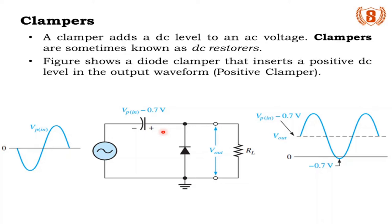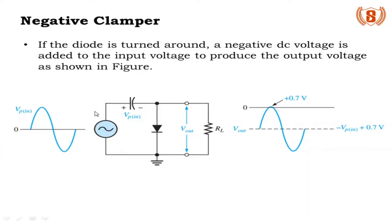From this point, the capacitor will try to discharge. The only option for the capacitor to discharge is through the resistive load. In this way the output gets shifted from its original position.